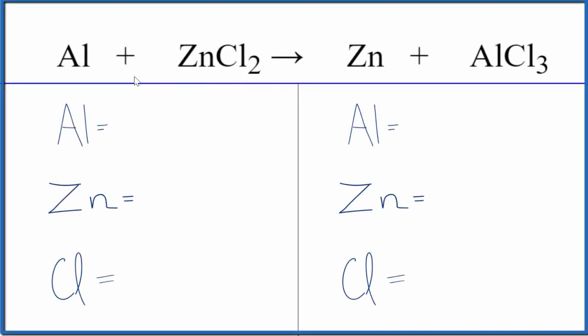Let's balance the equation and take a look at the type of reaction for Al plus ZnCl2. This is aluminum plus zinc chloride. So the first thing we'll do is we'll count the atoms up.